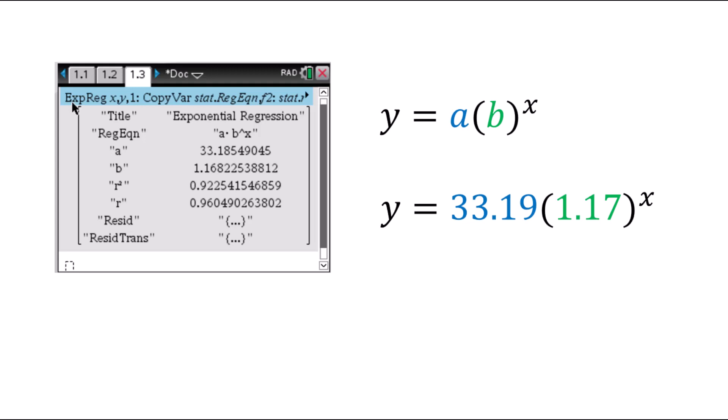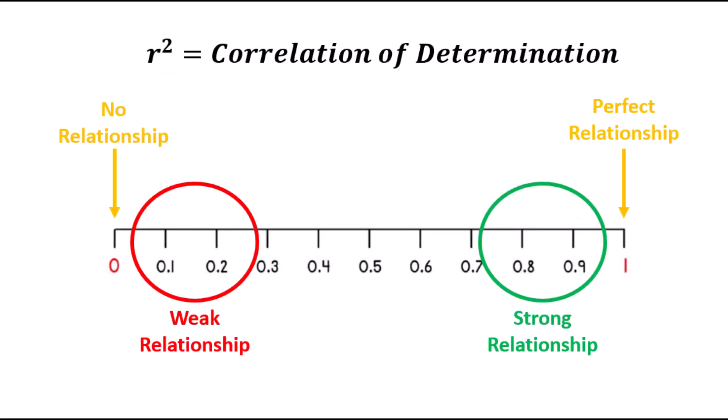I'm going to round both my A and B values to the nearest hundredth, which is two decimal spots. In this case, we can see that our percent increase is going to be 17%, and that's based on the base. Now that we've performed both the linear and exponential regressions, you can compare the R squared values, which is the coefficient of determination. These R squared values represent the relationship between the X and Y values, so whichever one has a number closer to one is going to be the better fit. A value closer to zero indicates a weaker fit, or no relationship at all.